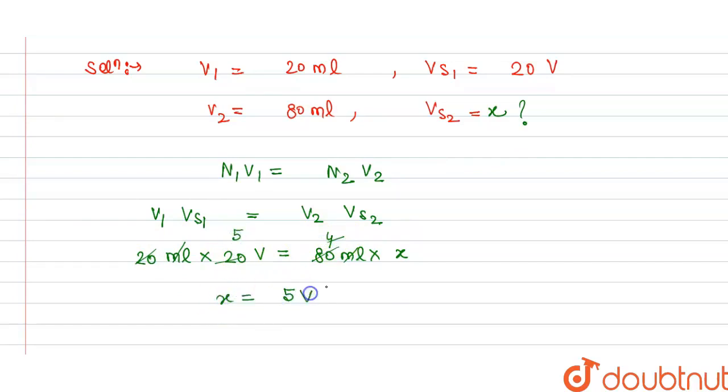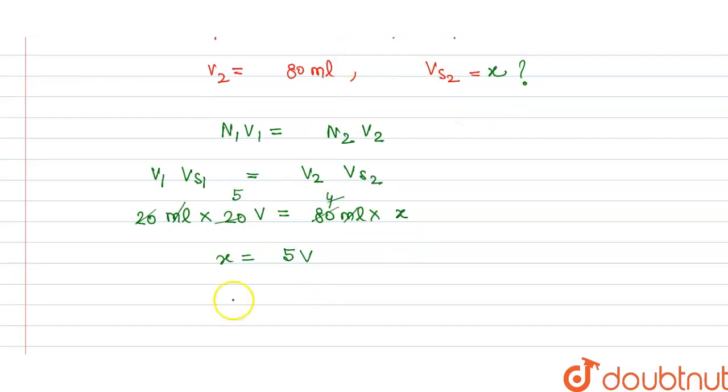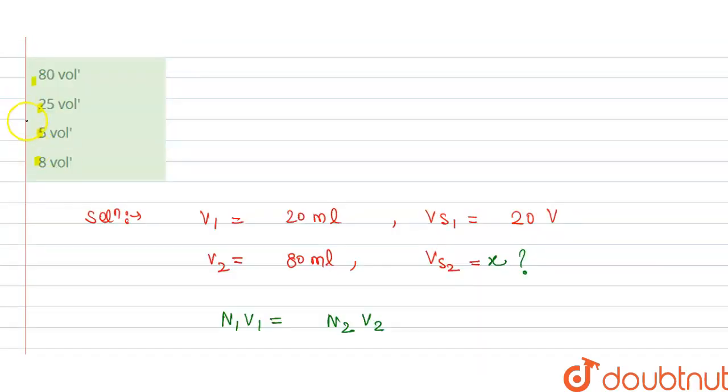x = 5 V. So volume strength of the solution, VS₂ of the solution, is 5 volume, and this is the answer for the question. From this we can say that option C is correct. Thank you.